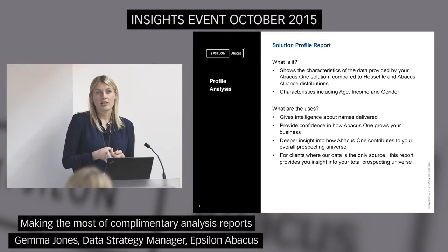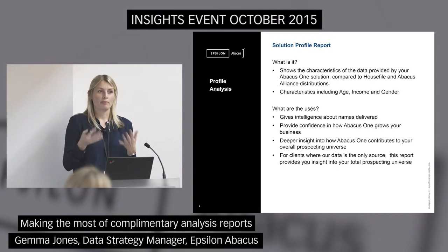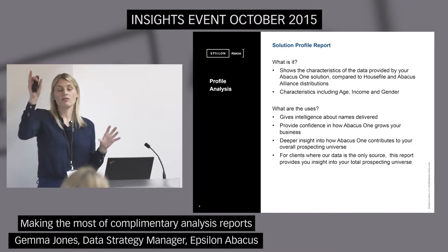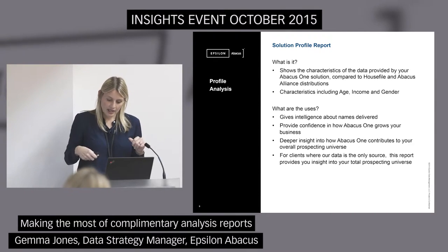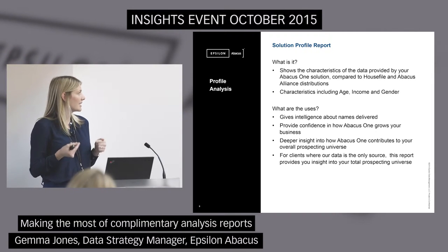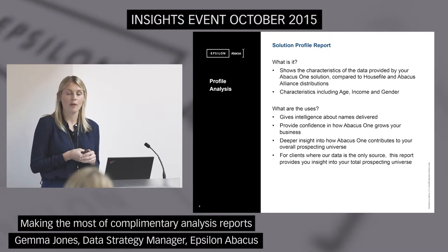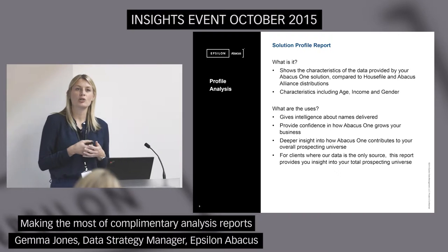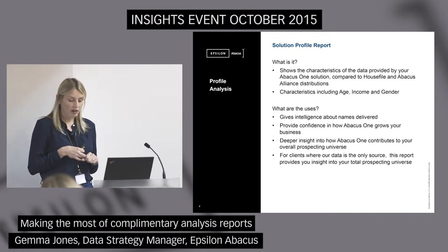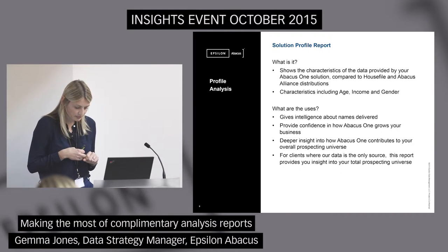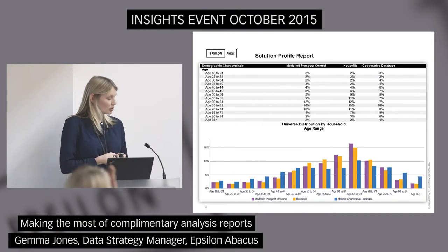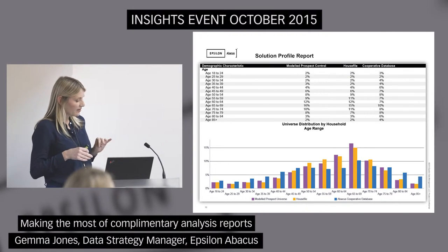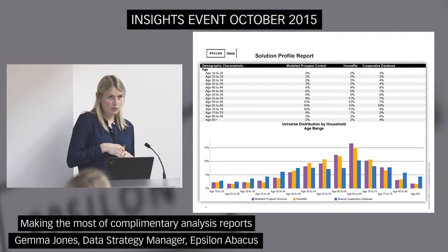The solution profile report is run alongside the Abacus 1 solution, which Ben beautifully explained earlier. Just to reiterate, the Abacus 1 solution is where we run several models in conjunction rather than just one model taking the top segments from that one. This report allows you to see the characteristics of the Abacus 1 prospecting data pool that we're outputting, and it should give you the confidence to know that it's outputting the right names because it compares to your house file based on things like age, income, and gender. In this snapshot of the solution profile report, you can see the comparison between your house file and the Abacus 1 modelled data.